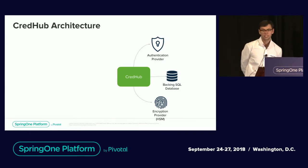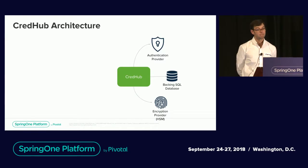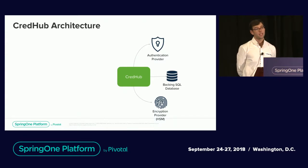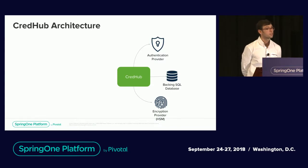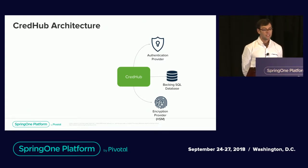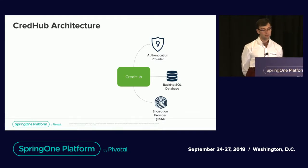What does CredHub look like from an architecture standpoint? It's pretty simple — it's really just a microservice in front of a backing SQL database. When you attempt to log into CredHub, you go to an authentication provider over mTLS or OAuth 2. Every time you store a credential or have CredHub generate one for you, it uses an encryption provider. There's one out of the box — it's not an HSM, just an out-of-the-box encryption provider — but you can plug in your own HSM. Currently we support Luna, and there's work being done to add other providers.